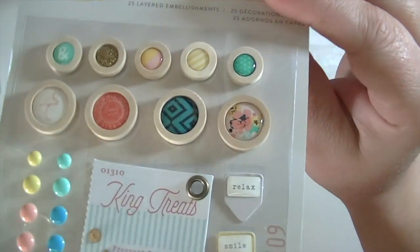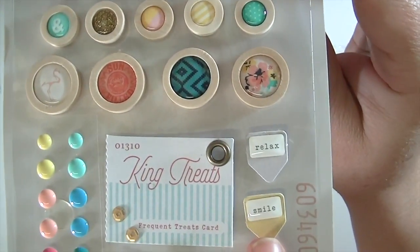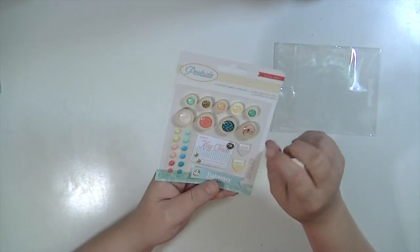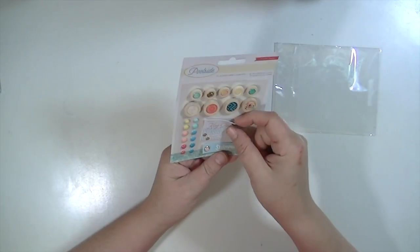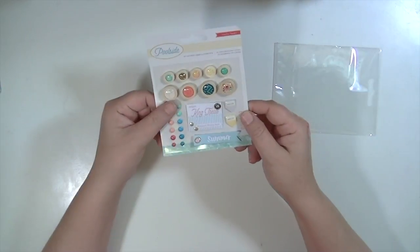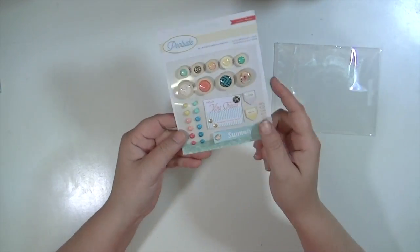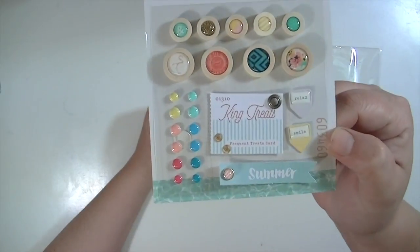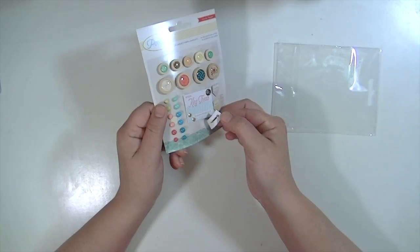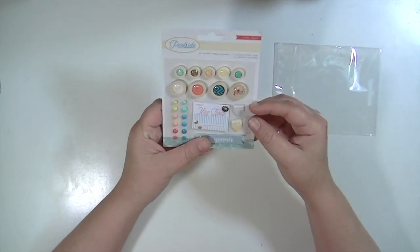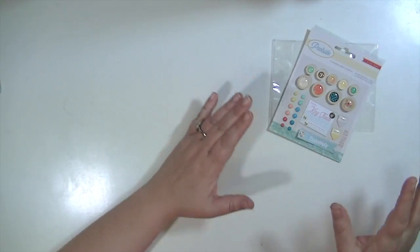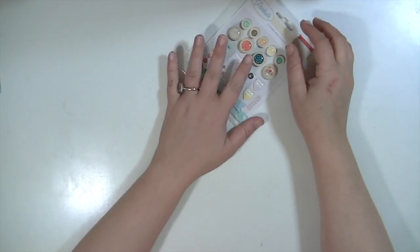I love these little tabs right here that say smile and relax, and they're epoxy also. Or enamel. And then this is just a cute little embellishment that has a little eyelet. And then some enamel dots. What a perfect amount of enamel dots. There's like two of each color. This one actually is a brad. I just really like these Layered Embellishments. It's a really nice way to have a mix of different things.